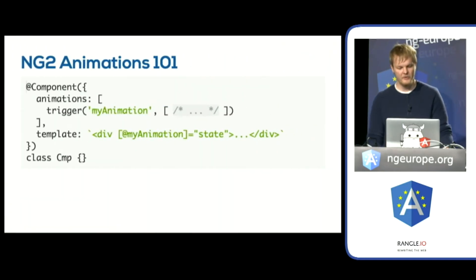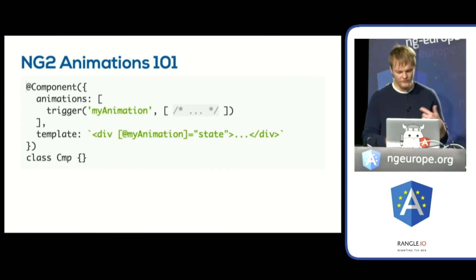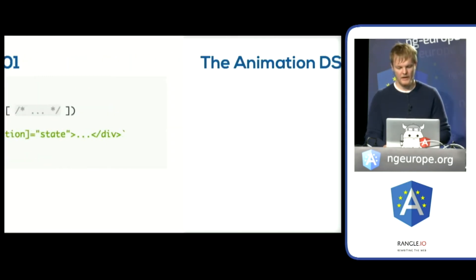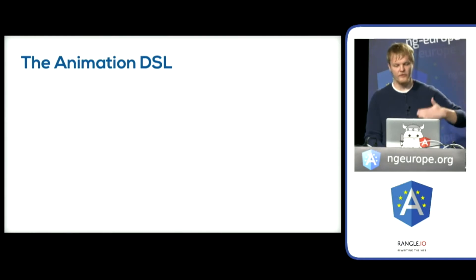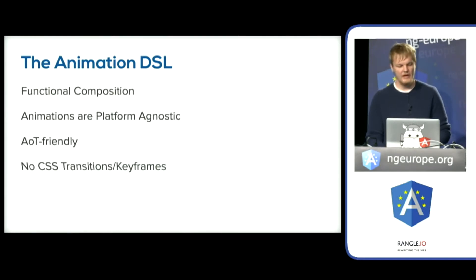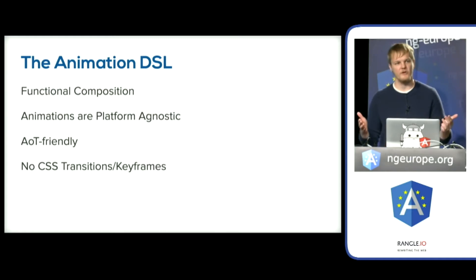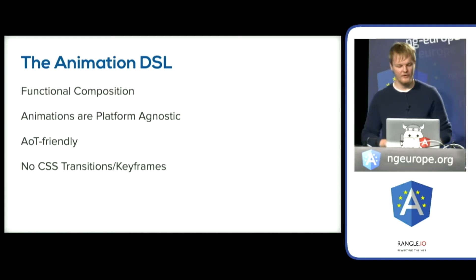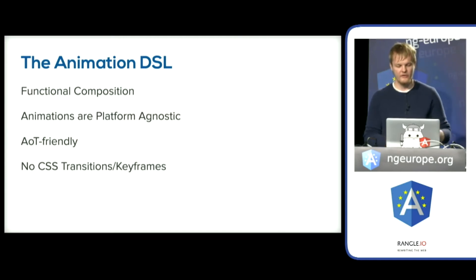The code looks like this: we have a trigger called myAnimation, and when the state of myAnimation has changed, this animation runs. The DSL is a mixture of functional composition and styling. All the animation code is platform-agnostic — we could port it to iOS or Android. And with Angular 2's ahead-of-time compilation, this is AOT-friendly, so all the animation code will be optimized and ready as soon as the application starts.